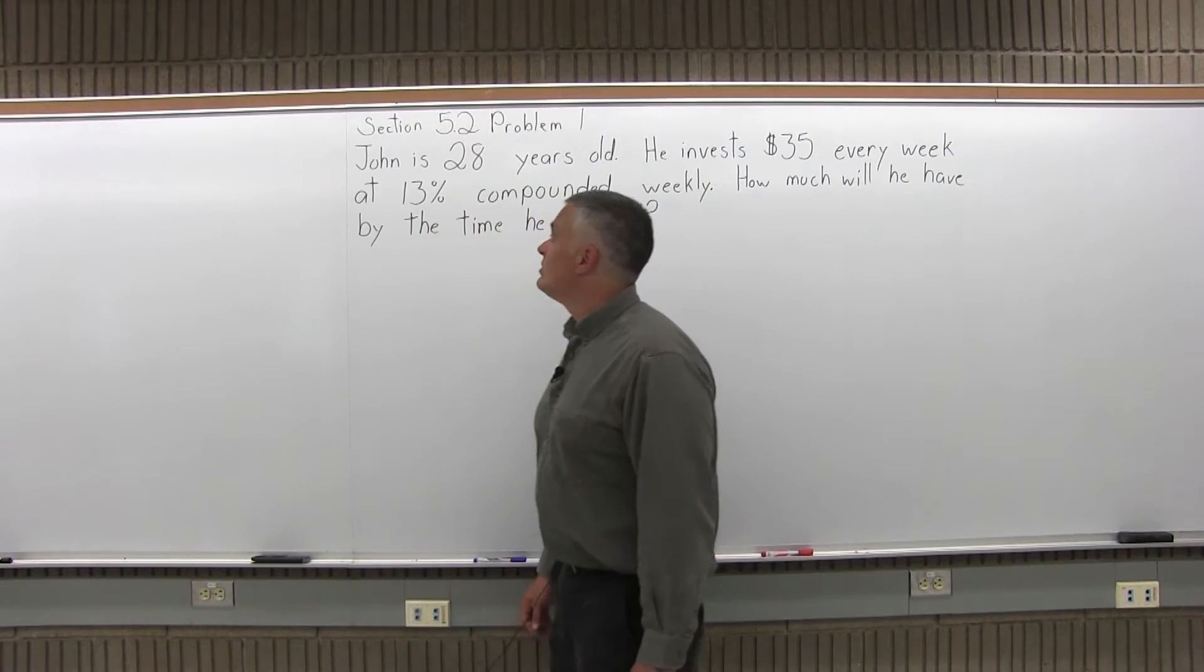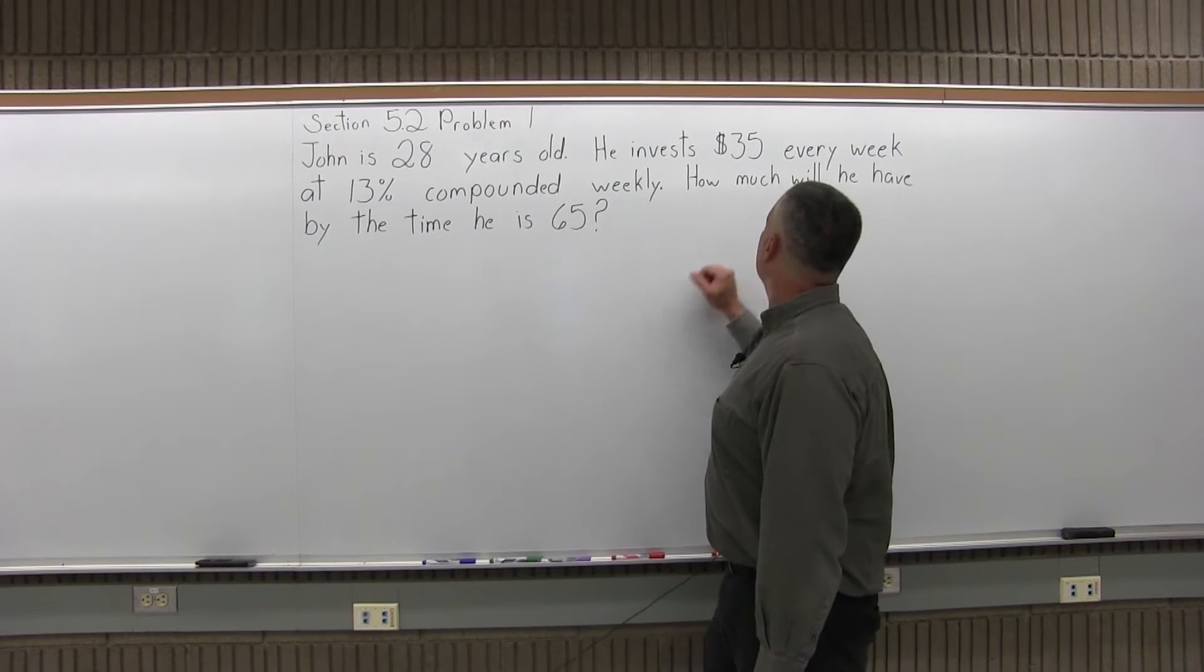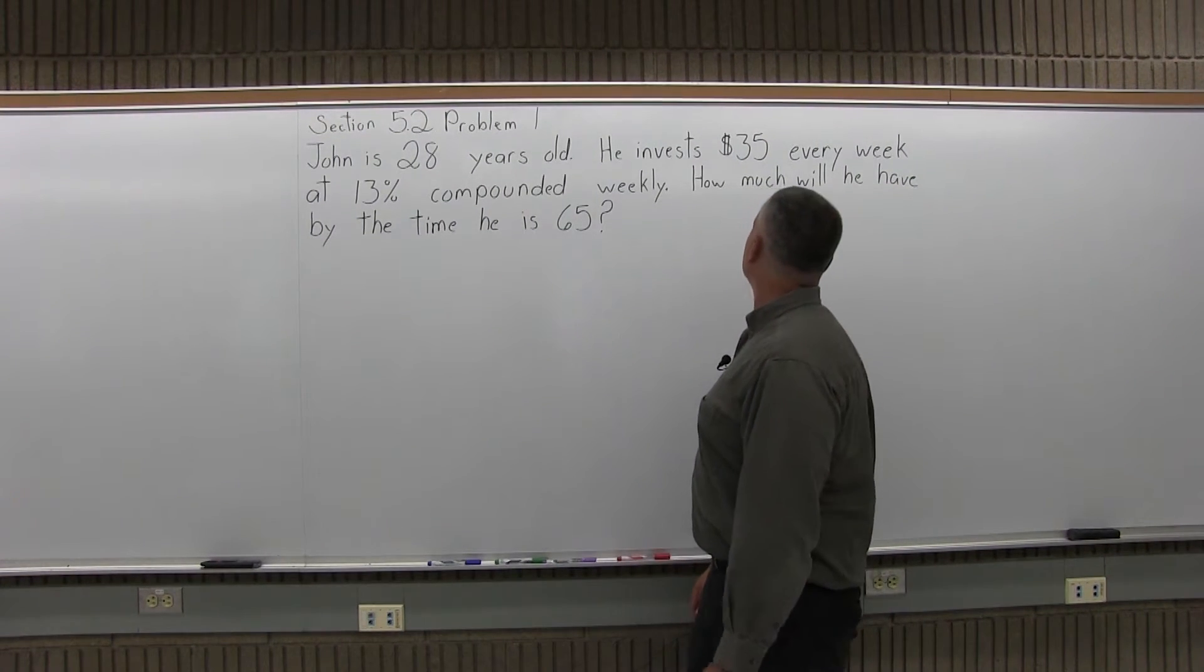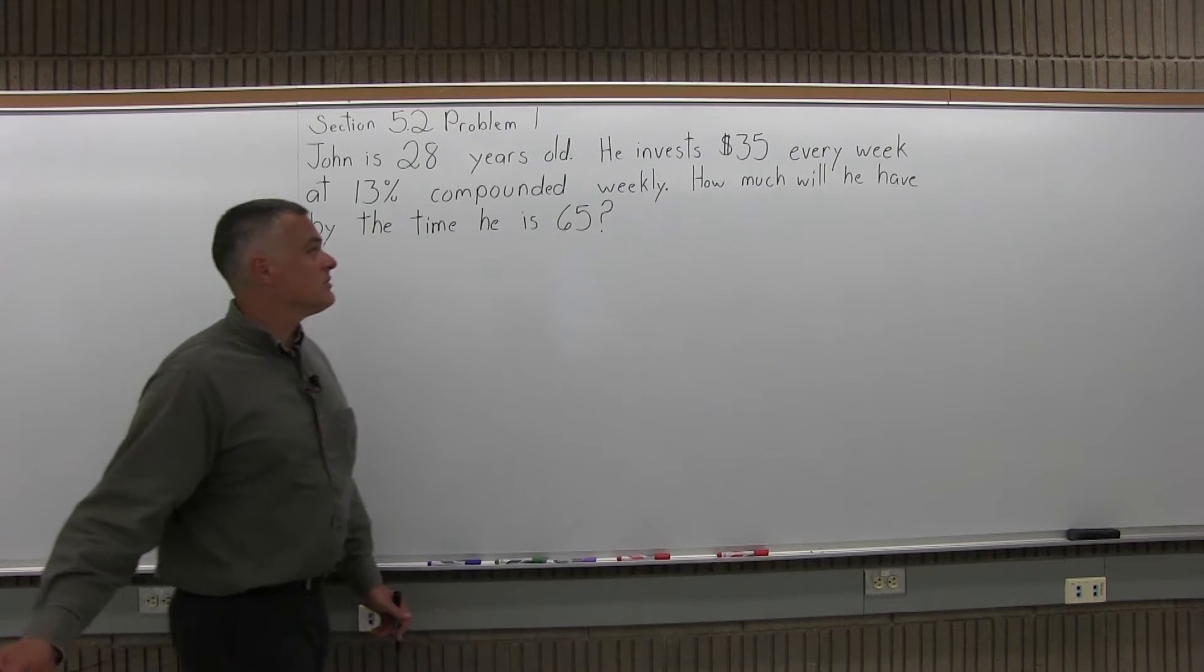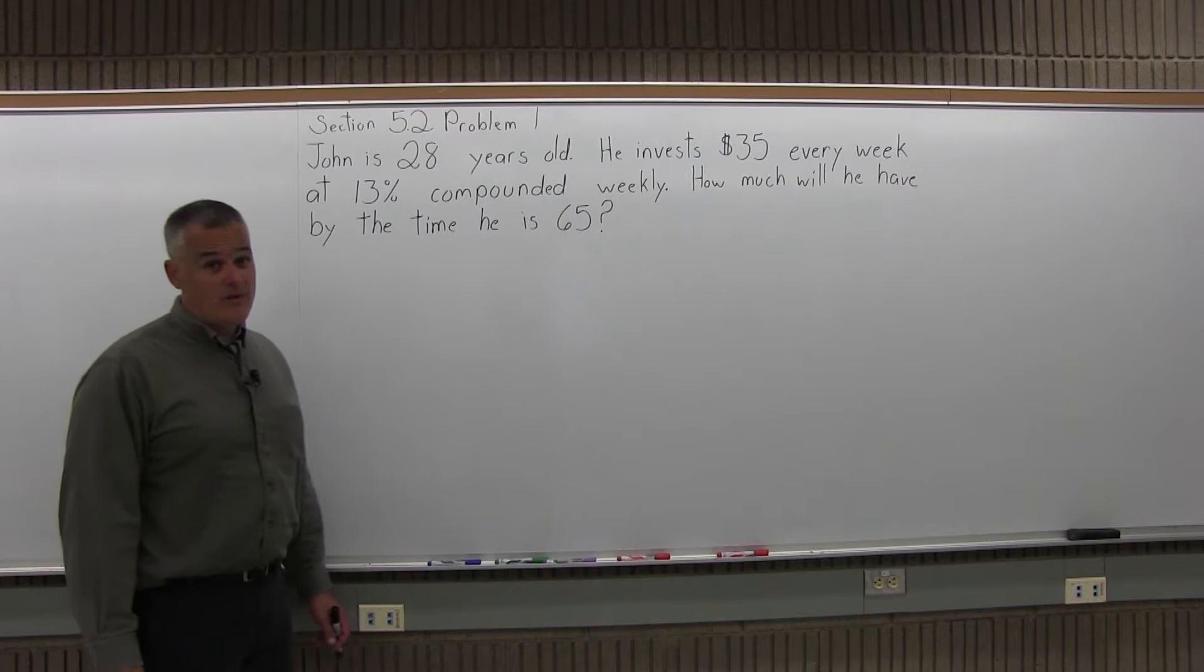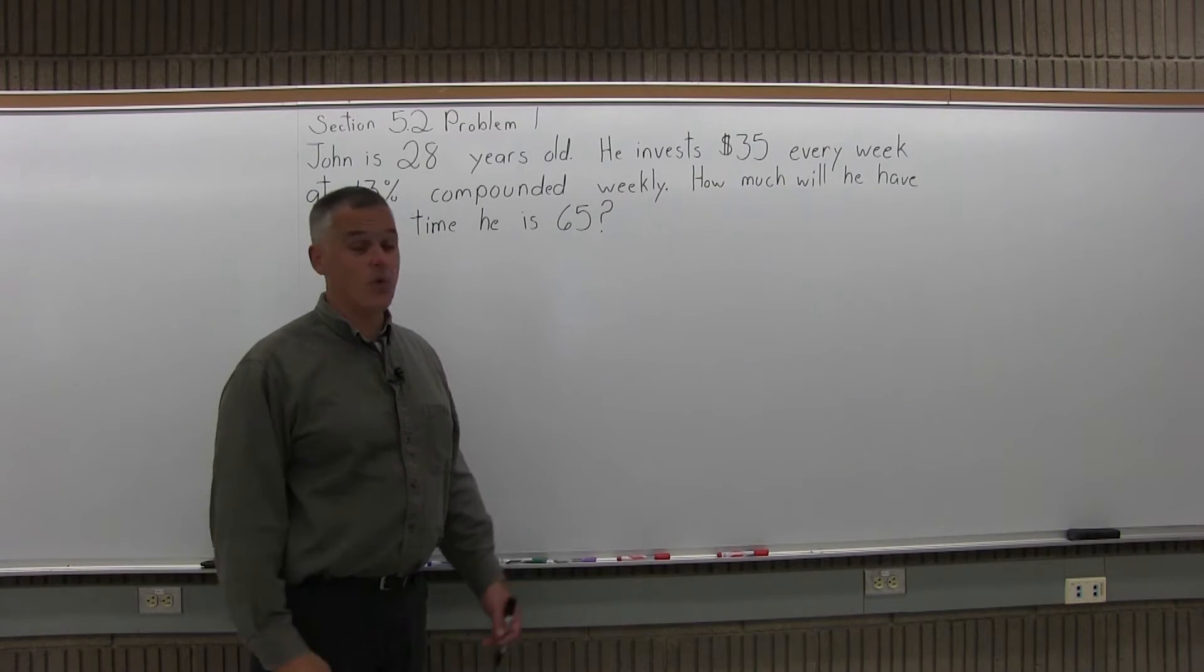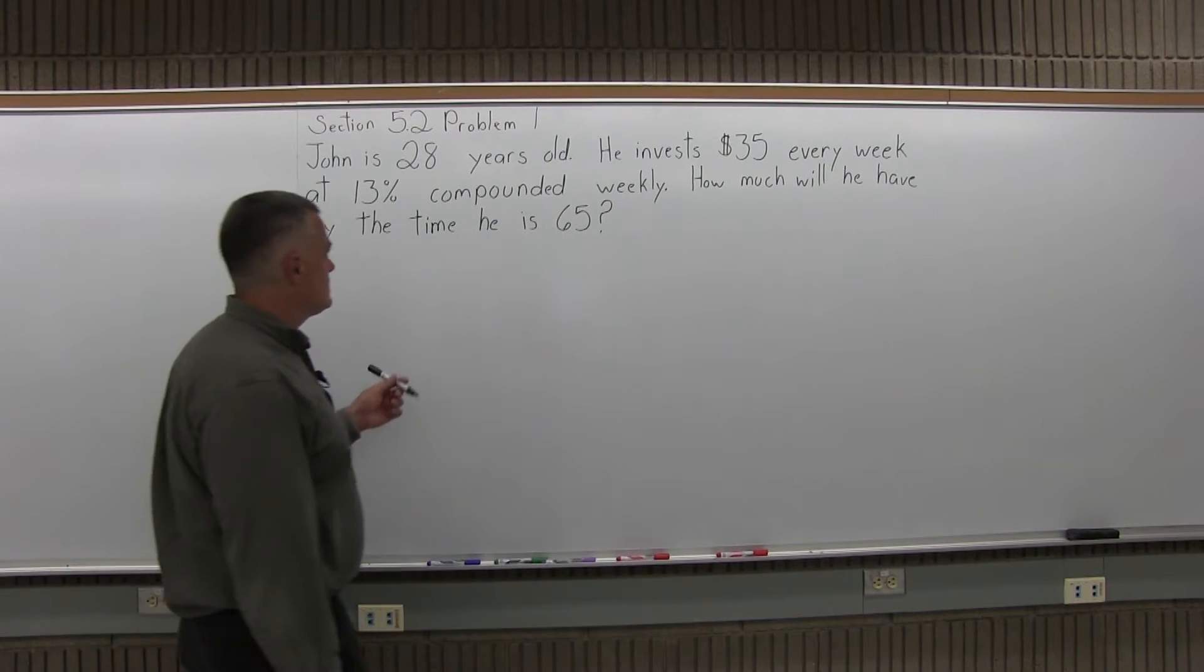This is Section 5.2, Problem 1. It says John is 28 years old, he invests $35 every week at 13% compounded weekly. How much will he have by the time he's 65, which is a typical retirement age? $35 a week is not a huge amount to spend, a lot of people spend that much on coffee. If you smoke, it'll be more than that. It's not a huge amount, and you'll see it'll amount to something pretty substantial.